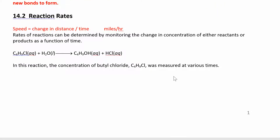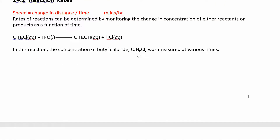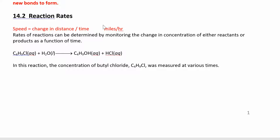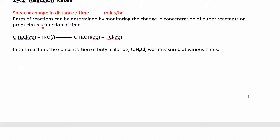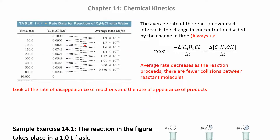Now let's talk about reaction rates. When you're driving your car, you look at how fast you're going — miles per hour, change in distance over change in time. For chemical reactions, the rate is the change in concentration over the change in time. If you had a reactant turning into a product and you measured its concentration at a bunch of different times, you'd get a chart like this.